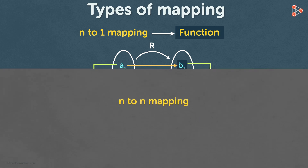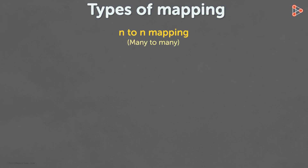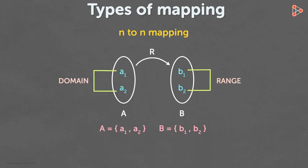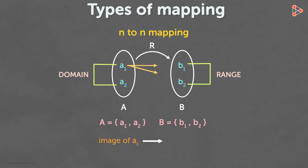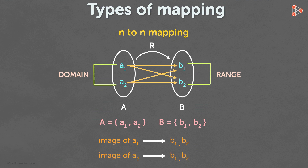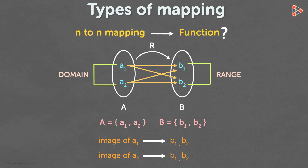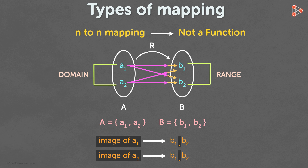And now we come to the last type: many to many. Here's the arrow diagram. A1 has two images B1 and B2, and A2 also has two images B1 and B2. If the mapping is many to many, then the relation is not a function. This is because more than one element in set A has more than one image in set B.